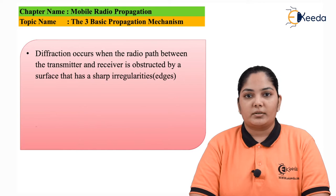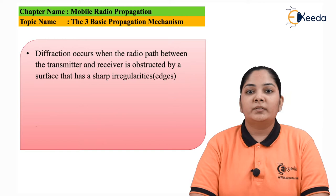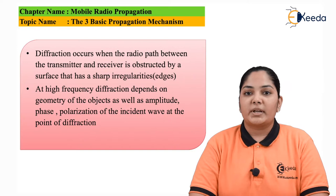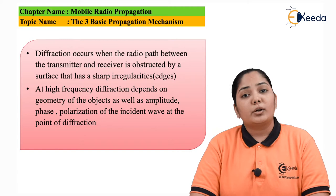Diffraction is one of the reasons why we are able to receive electromagnetic mobile transmissions. At higher frequencies, the diffraction depends upon the geometry of the object, as well as the amplitude, phase, and polarization of the electromagnetic waves.